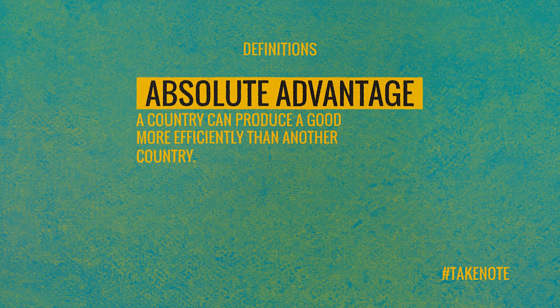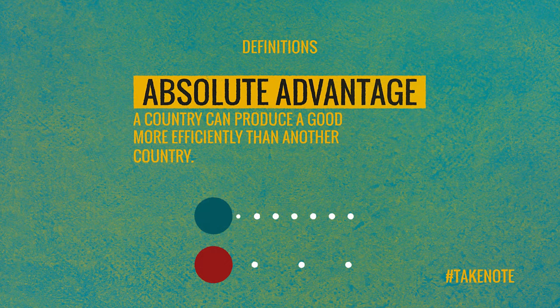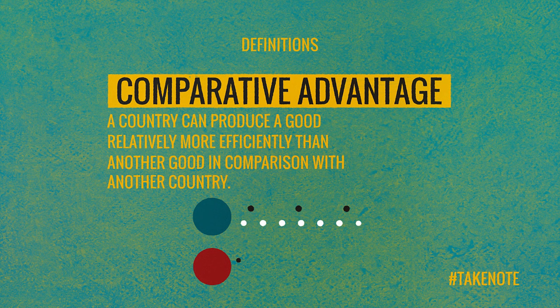To begin with, there is what's called absolute advantage — that's a case where a country can produce a good more efficiently than another country. Comparative advantage is a different concept. It's really comparing not only the relative efficiency of producing two goods, but also comparing the relative efficiency in two different countries.